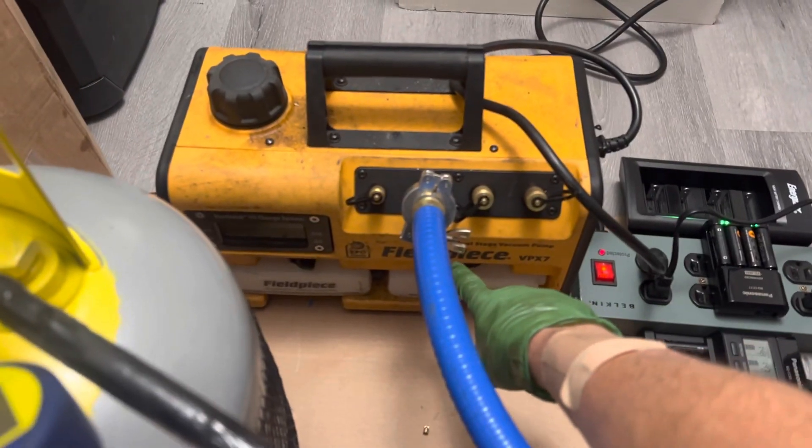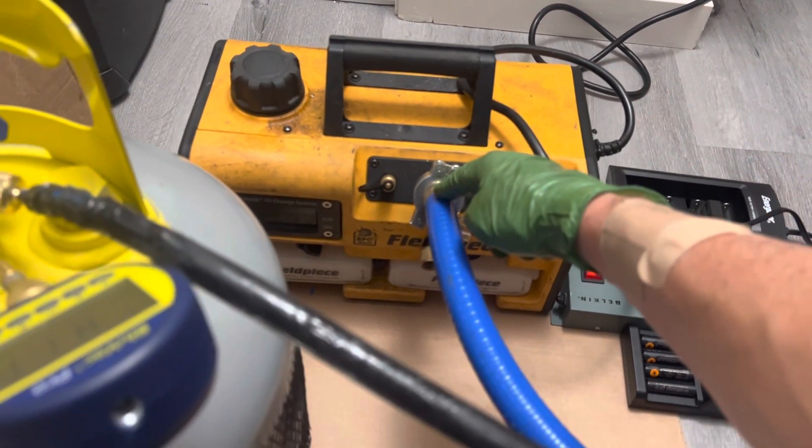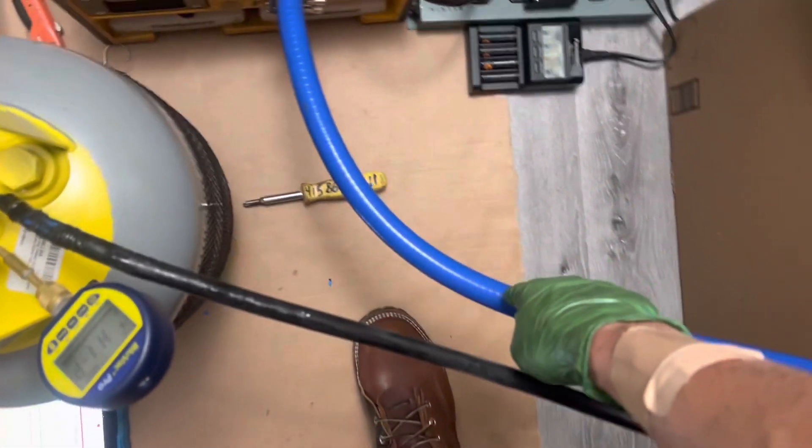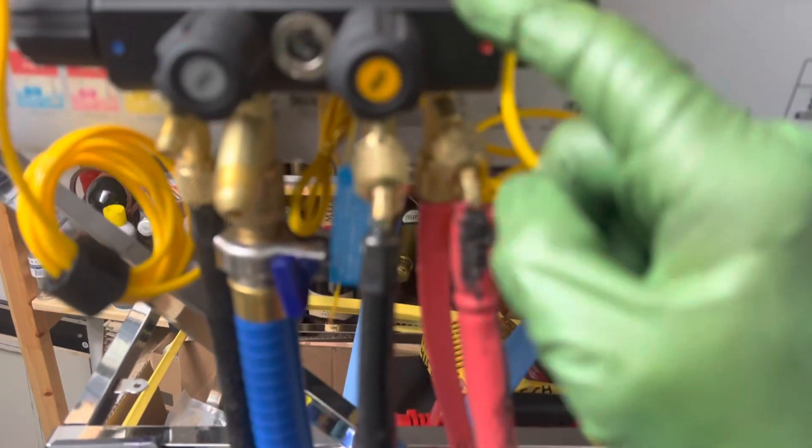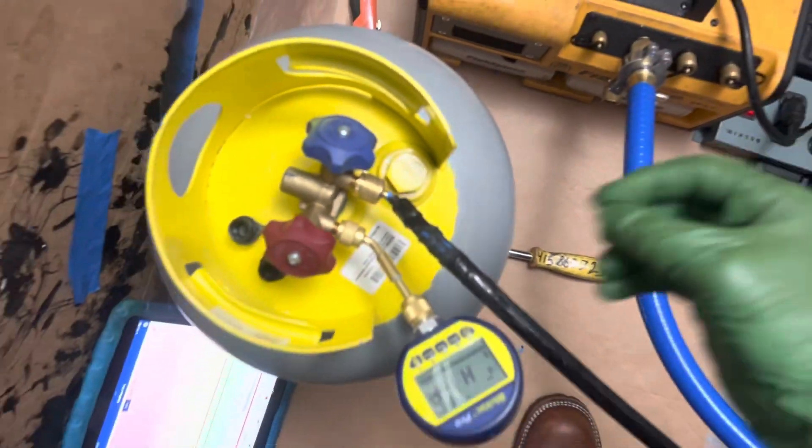Let's get started. We're going to use the FieldPiece 10 CFM vacuum pump going through the three-quarter inch silicone vacuum rated hose, going up to the manifold to each of the ports, but we're only going to use one. I went over to the one that has the valve core depressor.